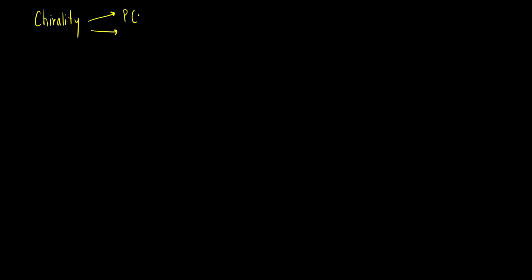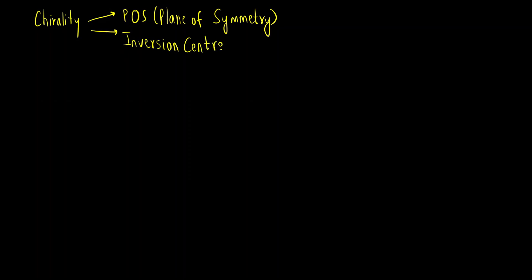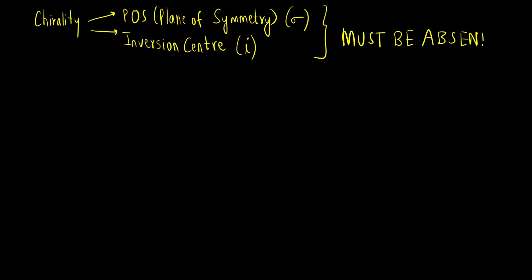Let us first recap the condition for a compound to be chiral. The condition for chirality is that the elements of symmetry must be absent — like plane of symmetry, which is one element of symmetry that must be absent, or inversion center (also called center of inversion). Both these elements of symmetry must be absent. If any element of symmetry is present, the molecule will be achiral or optically inactive. For a compound to be chiral or optically active, both these elements of symmetry must be absent.